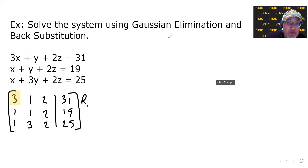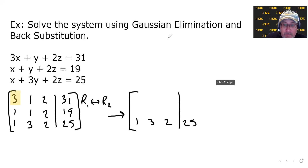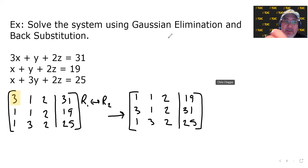I'm going to do a row swap with the first and the second. The third row stays the same: 1, 3, 2, 25. Now switching the first and second rows: the old first row — 3, 1, 2, 31 — moves into the second row position, and the old second row — 1, 1, 2, 19 — moves into the first row position. I'm going to continue to highlight where my pivots are going to be — that's called the pivot position in linear algebra.